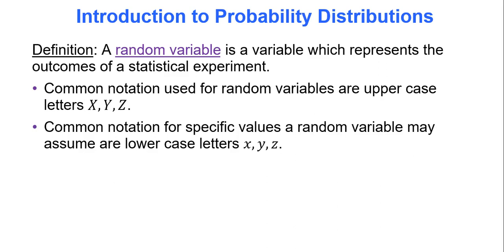For instance, if I wanted to flip a coin 5 times, what is the probability you get 0 heads, 1 head, 2 heads, 3 heads, 4 heads, 5 heads, and listing each of those probabilities? Yes, it is a lot of calculating.